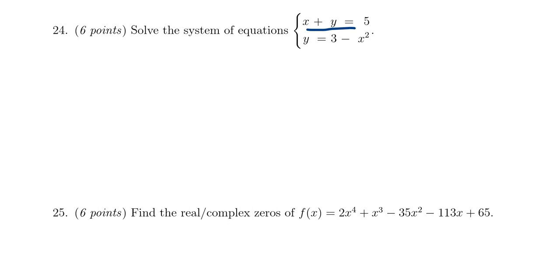The first equation is x plus y equals 5. That is the graph of a line. But the second one, y equals 3 minus x squared, that's the graph of a parabola. We have a quadratic function going on there.